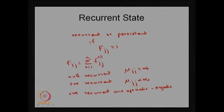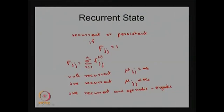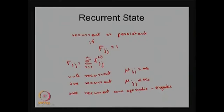Any state is called ergodic whenever it is positive recurrent as well as aperiodic. Aperiodic means the periodicity of that recurrent state is 1 — that is, the greatest common divisor of all possible steps in which the system returns to the same state is 1. If the period is 1 and the state is positive recurrent — meaning the mean recurrent time is finite — then it is called an ergodic state. In a Markov chain, if all states are ergodic — positive recurrent as well as aperiodic — then we call that Markov chain itself an ergodic Markov chain.